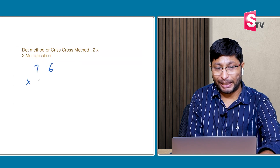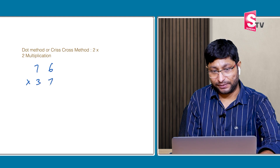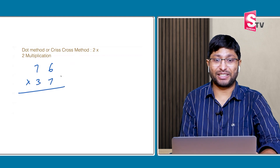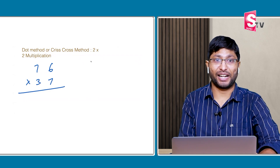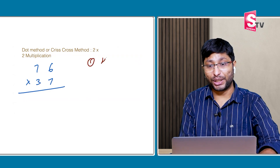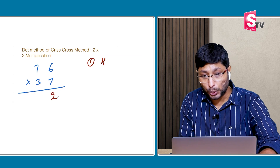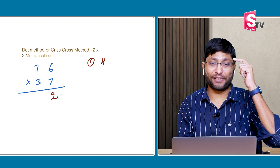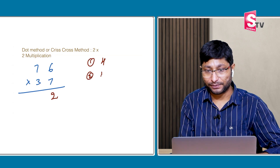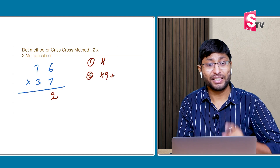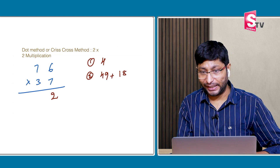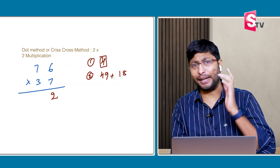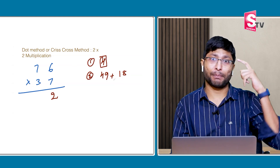76 × 37. Doing big numbers. Step 1: 6 × 7 = 42. Write down the 2; 4 is the carry.